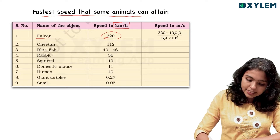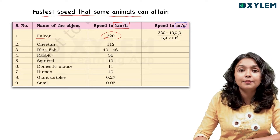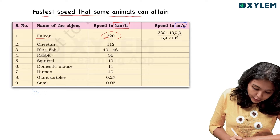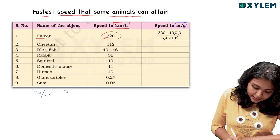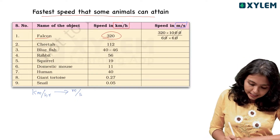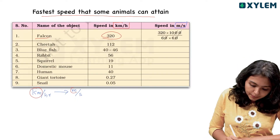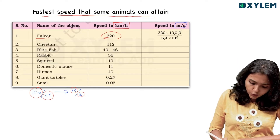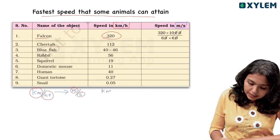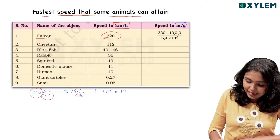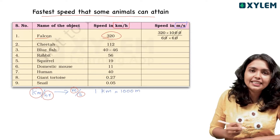We say kilometer per hour and meter per second. That's why we say kilometer is to meter as hour is to second. One kilometer — how many meters is 1 kilometer? Yes, 1 kilometer is 1000 meters.